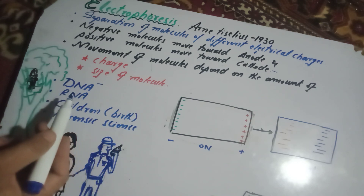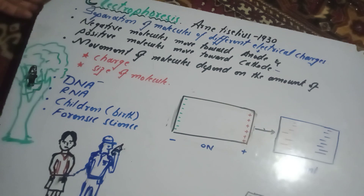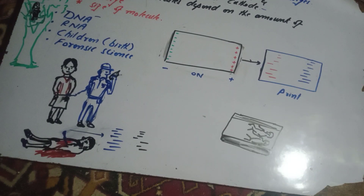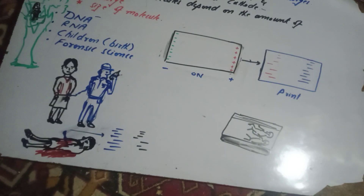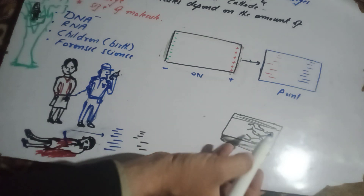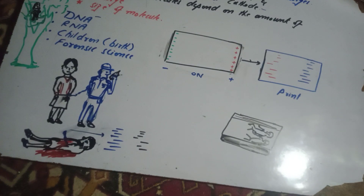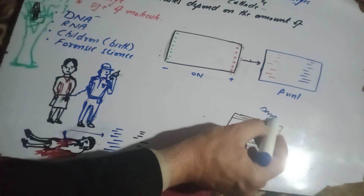Electrophoresis is also used for separation of proteins or RNA. The second application is in forensic science, used to detect crimes. For example, in cases where children are mixed up during childbirth, the electrophoresis technique and DNA sequencing is used. The DNA sequences are then compared.